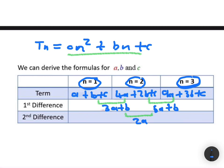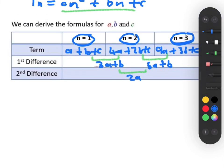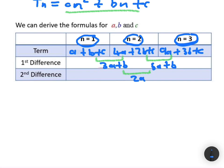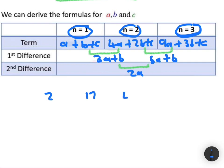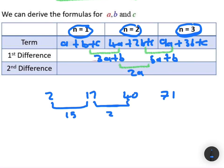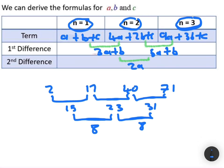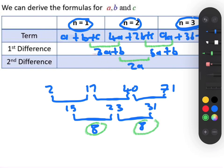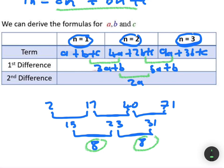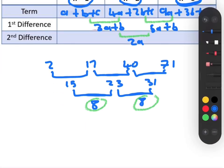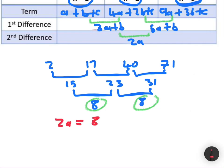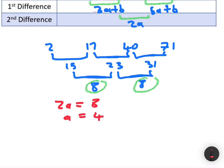Let's apply this to our first quadratic sequence: 2, 17, 40, 71. The first differences are 15, 23, 31, and the common second difference is 8. So 2a = 8, which gives a = 4. Then 3a + b = 15; since a = 4, we get 3(4) + b = 15, so b = 15 − 12 = 3.